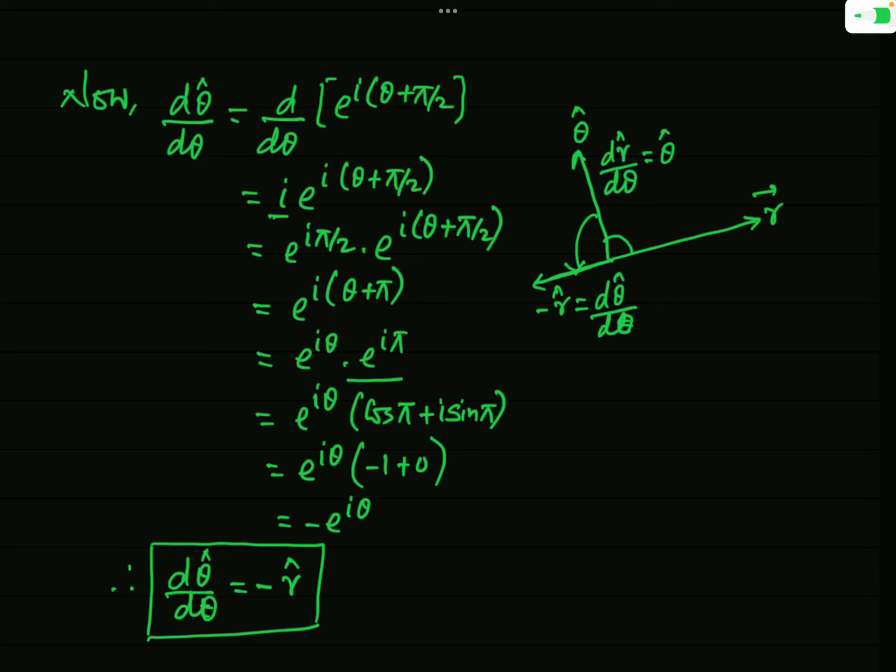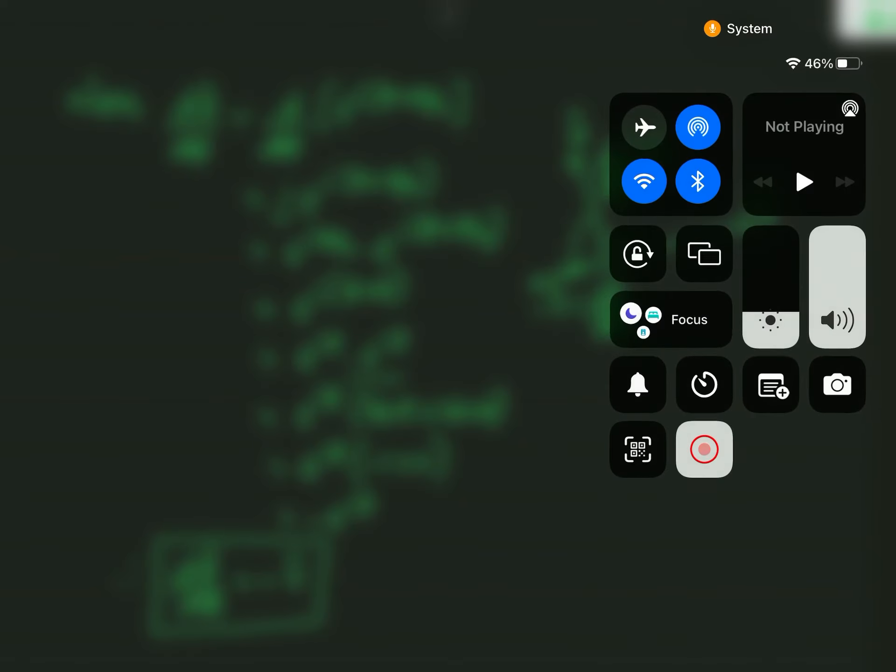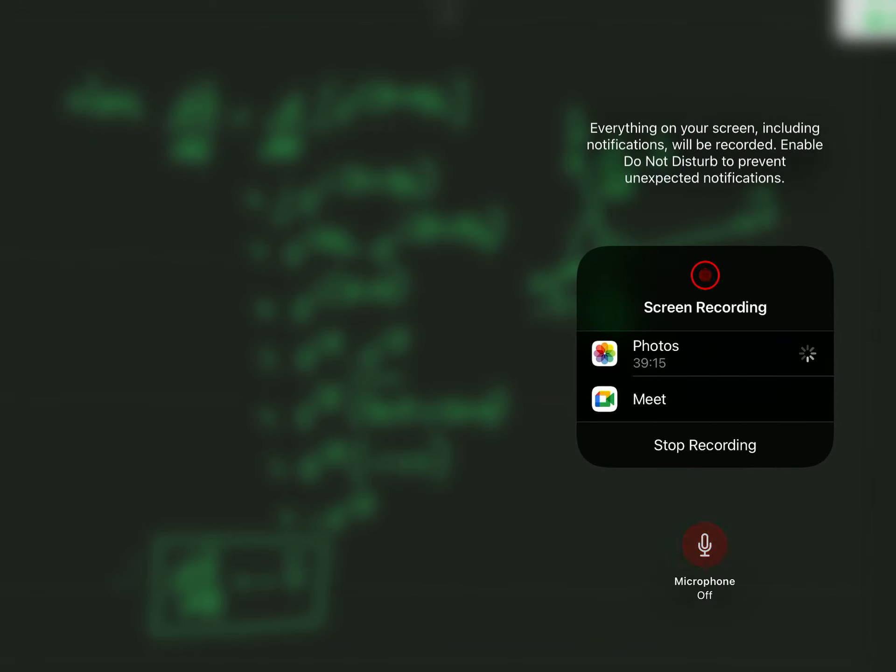In this lecture I have not discussed the expressions for velocity and acceleration, to keep it from being too lengthy. In the next lecture, continuing from this, we will derive the velocity and acceleration of a particle in plane polar coordinates, which are also very important for the discussion of motion in a central force field.